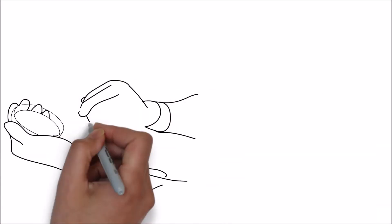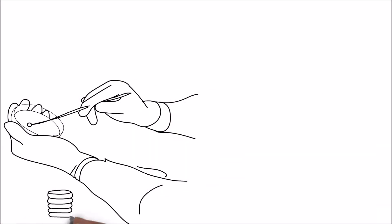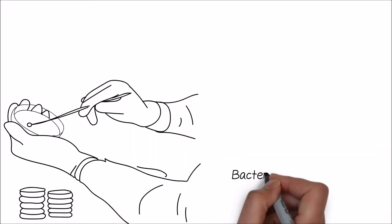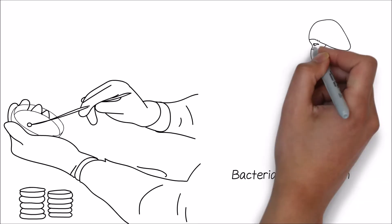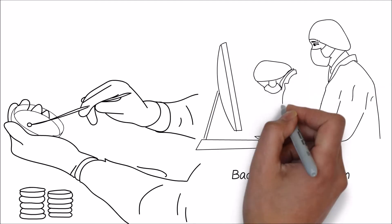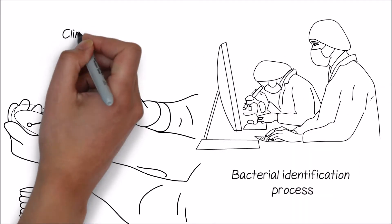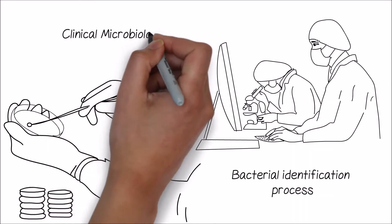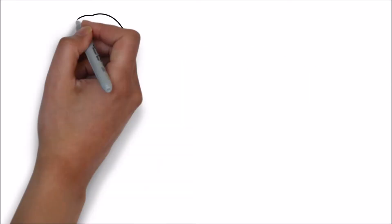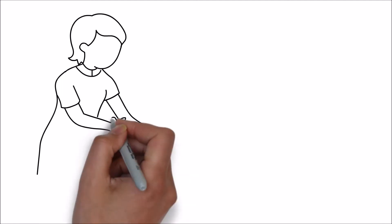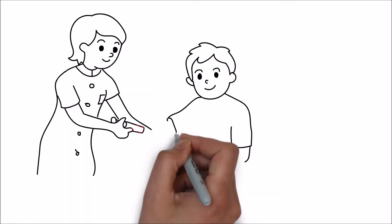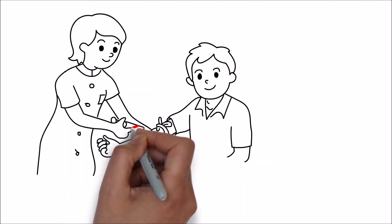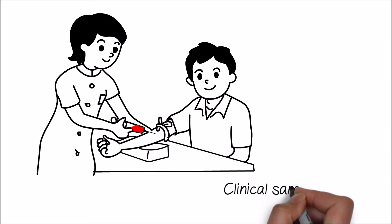Gram staining is a preliminary test in the bacterial identification process. It plays an important role in clinical microbiology, helping medical professionals in the diagnosis of infectious diseases directly from the clinical sample.